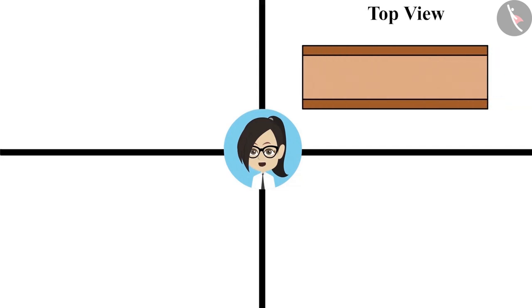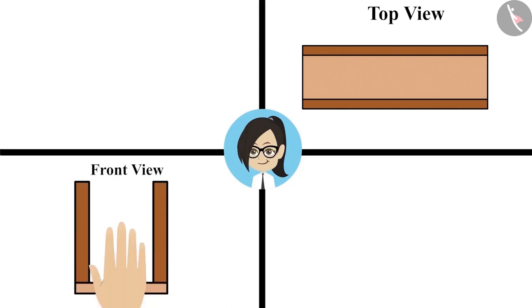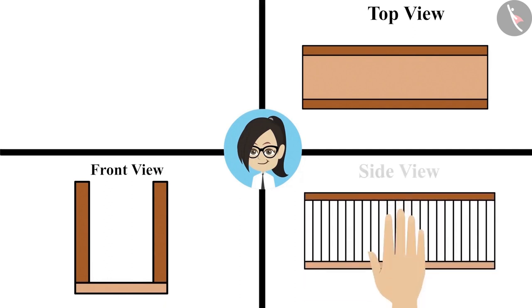Now see the front view. This drawing is in the shape of the English letter U. Now see the side view. What can it be? Oh, this is a rectangle.